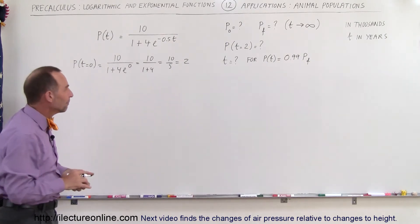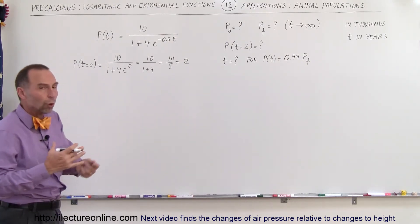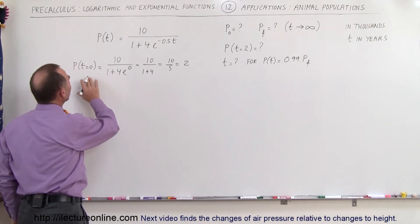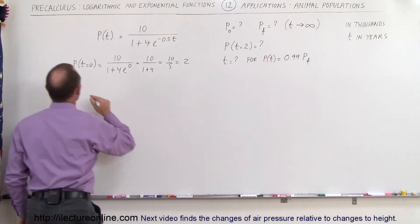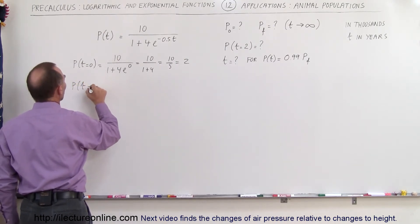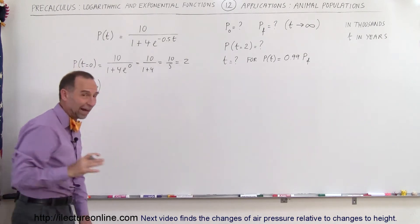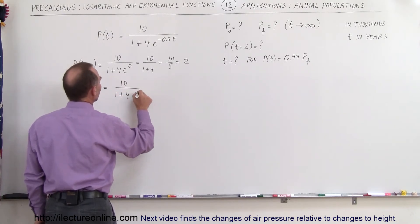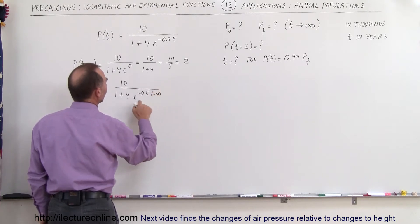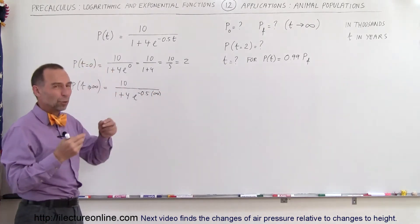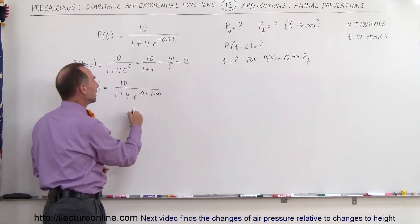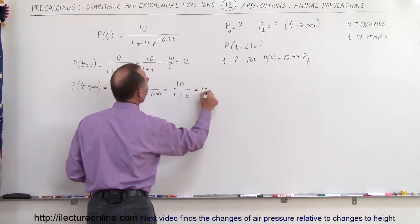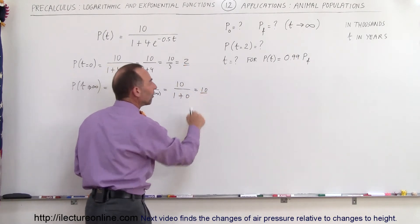If food is plentiful and predators are few, the population will continue to grow until it reaches the available resources. When time approaches infinity, the population equals 10 divided by (1 plus 4 times e to the minus infinity). Since e to the minus infinity goes to zero, this becomes 10 divided by 1, which equals 10 — meaning the population ends up at 10,000.